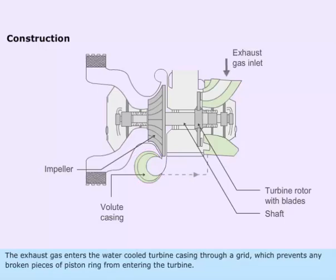The exhaust gas enters the water-cooled turbine casing through a grid which prevents any broken pieces of piston ring from entering the turbine.